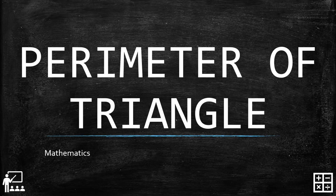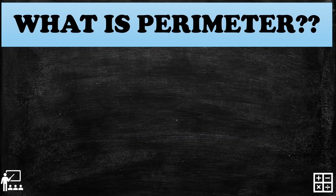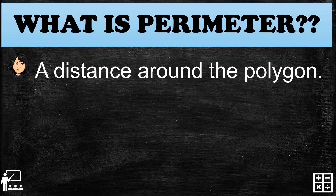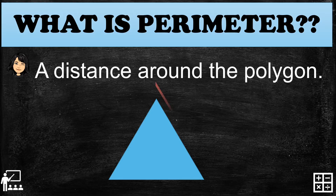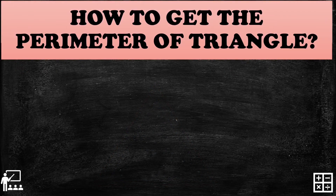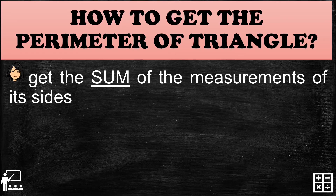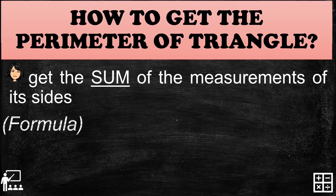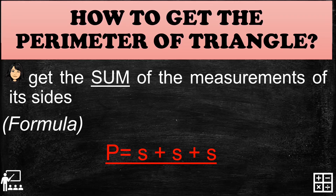This video lesson is about the perimeter of a triangle. A perimeter is the distance around a polygon. To get the perimeter of a triangle, get the sum of the measurements of each side, or you can use the formula P equals S plus S plus S.